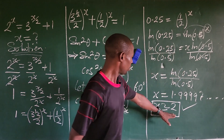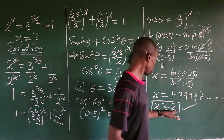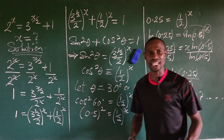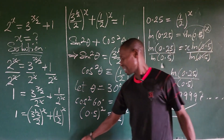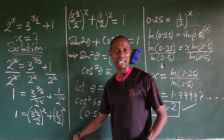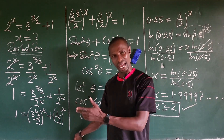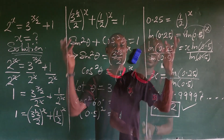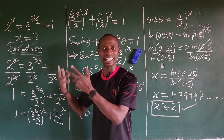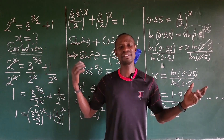So x = 2 is the value we found. If you put 2 into our initial exponential equation, you're going to get the left-hand side equal to the right-hand side, confirming our answer. This brings us to the end of this wonderful exponential challenge.